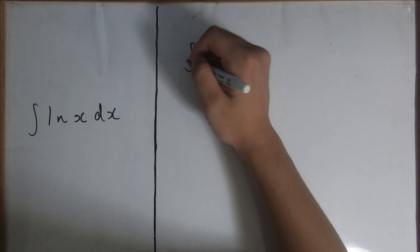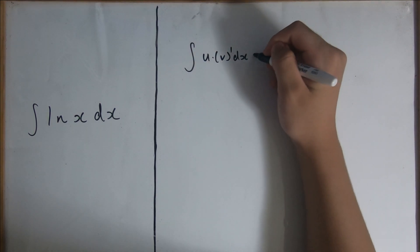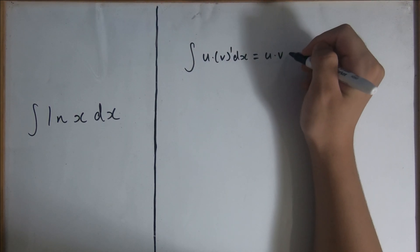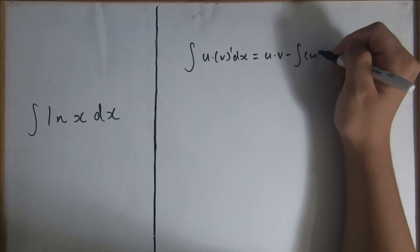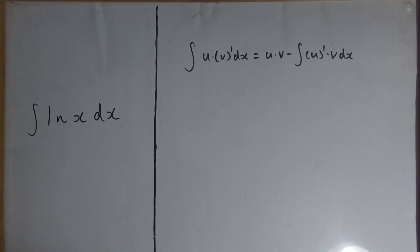Recall that the integral of u times v dash dx equals u times v minus the integral of u dash times v dx, where u and v are both functions of x.